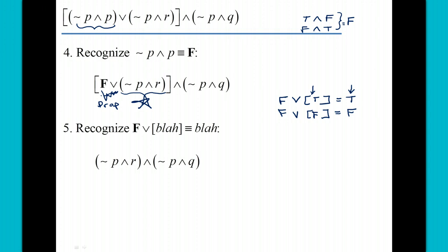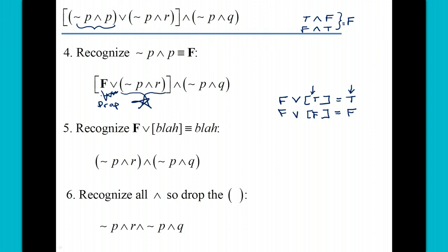At this point we're going to recognize that everything is an and. When you have all ands there's no need for parentheses. We just write the four statements as one big string. So we have, dropping the parentheses, we have not P and R, not P and Q.